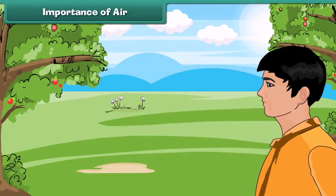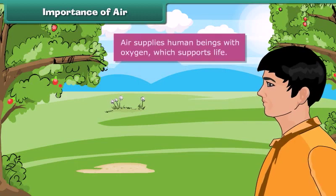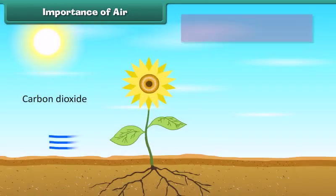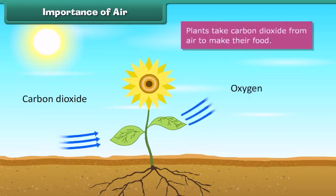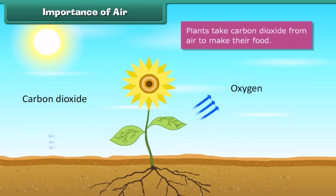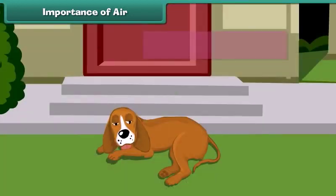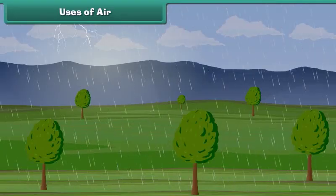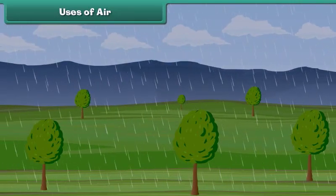Air supplies human beings with oxygen, which supports life. Plants take carbon dioxide from air to make their food. Animals also depend on the oxygen present in the air for survival.